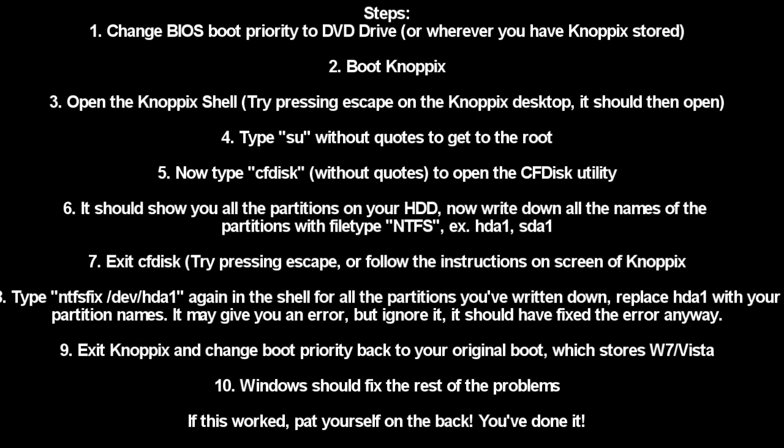Once you've typed SU and pressed Enter, you want to type CFDISK. It will show you your partitions on your hard drive and also the file type. You want to have a piece of paper and a pen, and write down all the partitions that have an NTFS file type beside them. In the tutorial, an example is HDA1 and HDA5 — mine was SDA. The letters might be different for you, it doesn't really matter, but just write those letters down. Then you want to exit CFDISK.